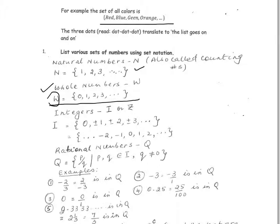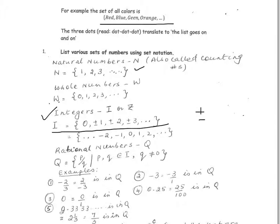Now let's look at the next set, which is larger than the set of whole numbers: the set of integers. The set of integers is denoted by the uppercase letter I. The set I includes zero, plus or minus one — meaning both positive one and negative one are included — plus or minus two, meaning both positive two and negative two are included, and the list goes on and on.